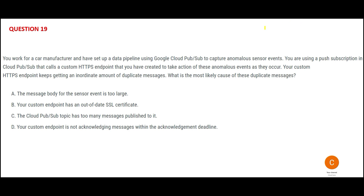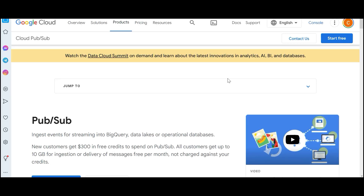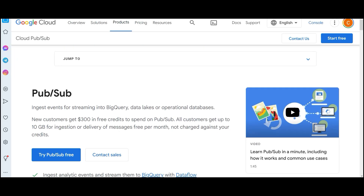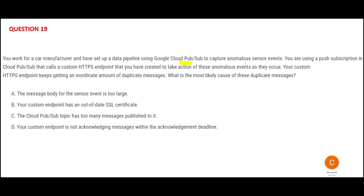In this question, a pipeline is set up using Pub/Sub, which helps stream into BigQuery and operational databases. They are getting sensor events and messages are being sent, but the problem is they are getting duplicate messages. Why? That is what you have to answer.